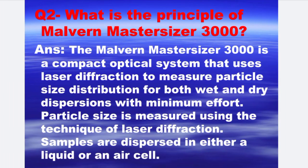Next is: what is the principle of the Malvern Mastersizer 3000? The answer is, the Malvern Mastersizer 3000 is a compact optical system that uses laser diffraction to measure particle size distribution for both wet and dry dispersion with minimum effort. Particle size is measured using the technique of laser diffraction. Samples are dispersed in either a liquid or an air cell.